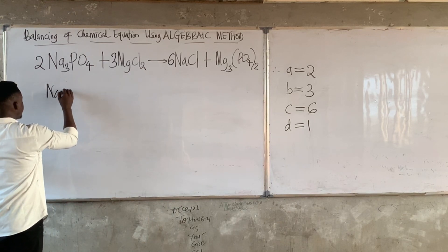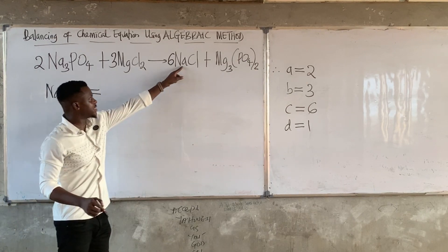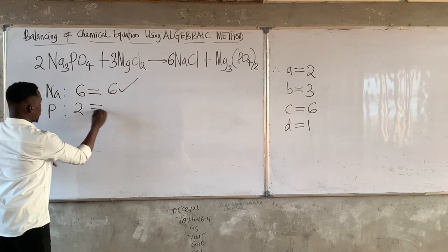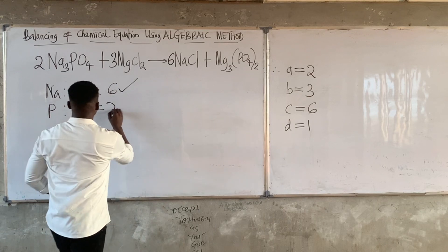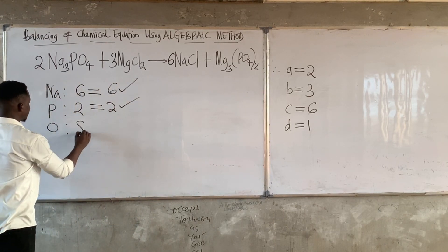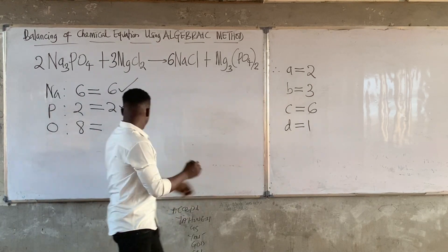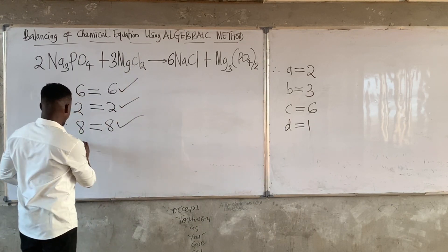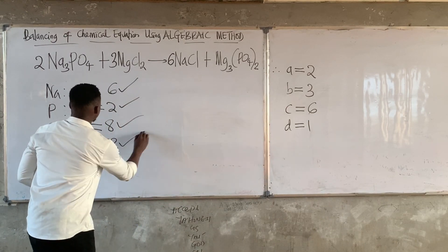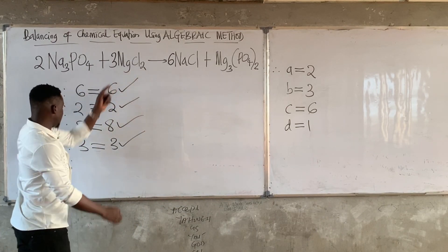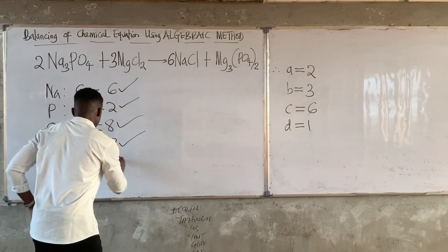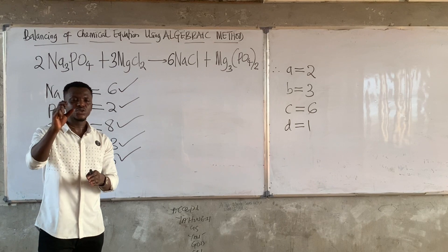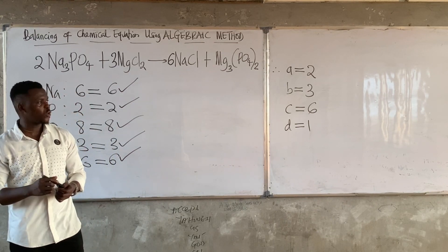Let's check: sodium — 2 times 3 is 6 on the left, 6 on the right — balanced. Phosphorus — 2 on the left, 1 times 2 is 2 on the right — balanced. Oxygen — 4 times 2 is 8, and 4 times 2 is 8 — balanced. Magnesium is 3 on the left and 3 on the right — balanced. Chlorine — 2 times 3 is 6 on the left, and 6 on the right — balanced. With the algebraic method, we can balance any equation of your choice. Please drop a comment to tell us what you think about this method. Thank you.